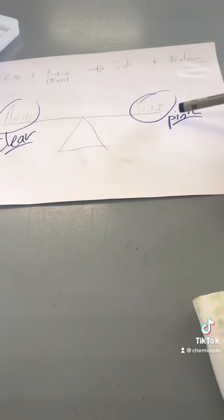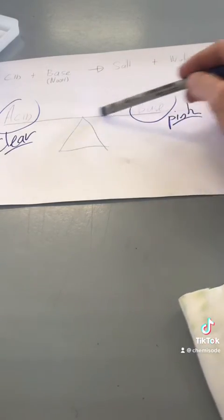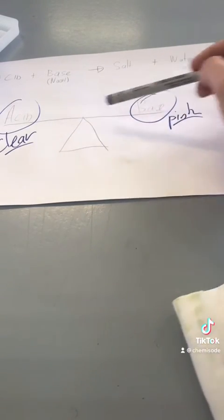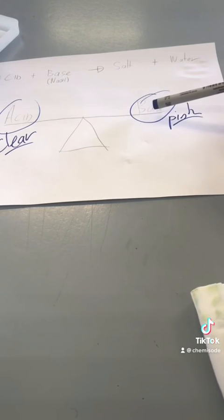If I continue to add the base I'll get a really pink color. But what I want to find is that time when this is pretty much even and that's when I first start to see that glimpse of pink sticking around.